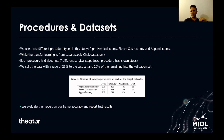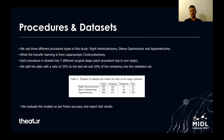We use three datasets consisting of three different procedures: right-hand colectomy, sclipoestrectomy, and appendectomy, while the transfer learning was from laparoscopic cholecystectomy. Each procedure is divided into seven different surgical steps, and each procedure has its own steps, although they have some in common like preparation and final inspection. We split the data with a ratio of 25% to the test set and 20% of the remaining to the validation set. We evaluate our models on per-frame accuracy and report the test results. The right-hand colectomy and sclipoestrectomy datasets are almost the same size, and the appendectomy dataset is almost three times bigger.